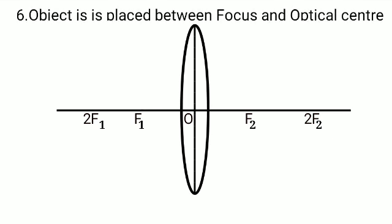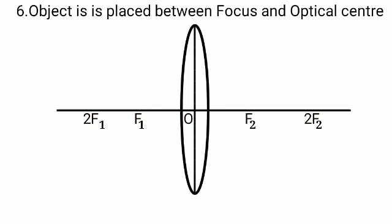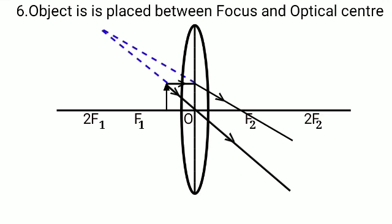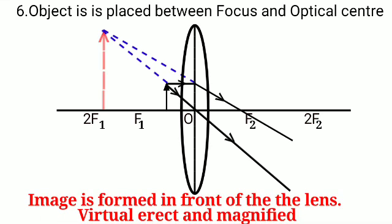The last one, which is most important with respect to your exam point of view, when the object is placed between optical center and focus. The rays after refraction they will be going away from one another. So they are divergent. In this case, we have to extend the rays and after extending the rays back, the image is formed in front of the lens only and it is virtual, erect and enlarged.